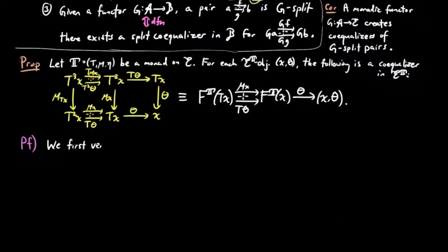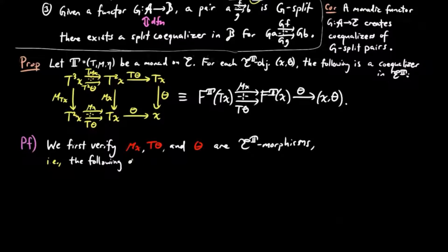So to prove this, we first verify that the morphisms in the diagram mu X, T theta, and theta are Eilenberg-Moore morphisms. In other words, the following diagrams commute.